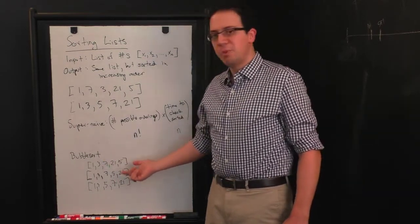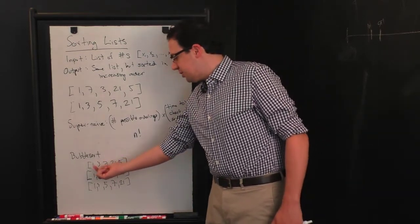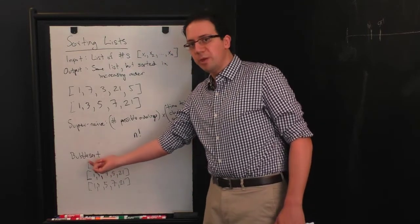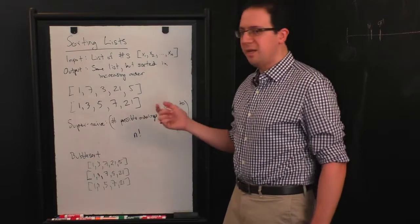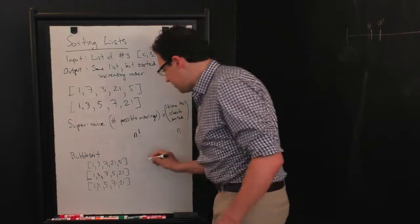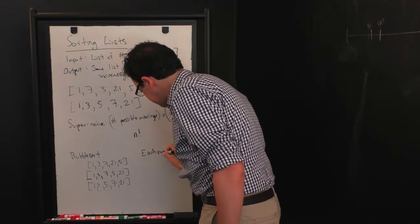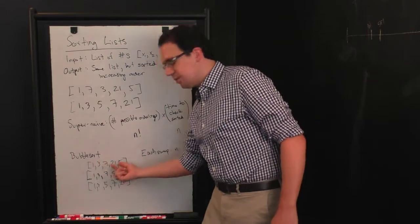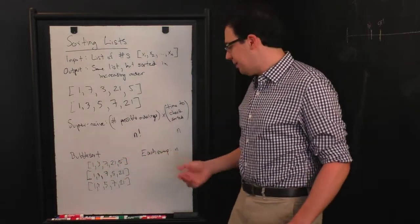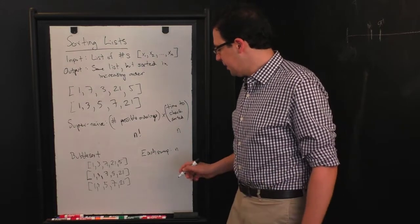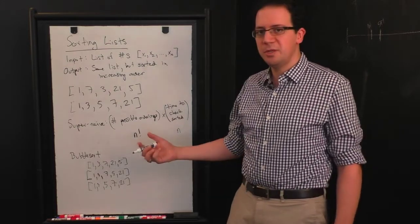So how long does bubble sort take? Well, each time you go through the list, let's call that a sweep. So you sweep across the list and anytime you find an adjacent pair that's out of order, you swap them. So each sweep is again roughly n steps, right? There are technically only n minus 1 pairs to check, but that minus 1 isn't going to affect this kind of asymptotic analysis.